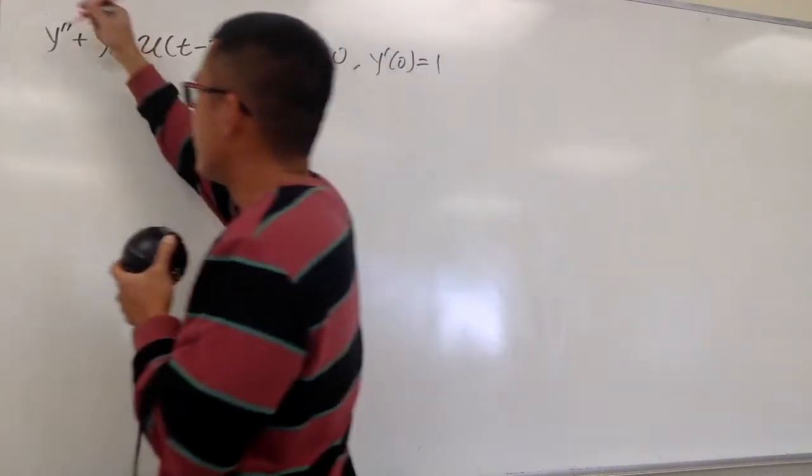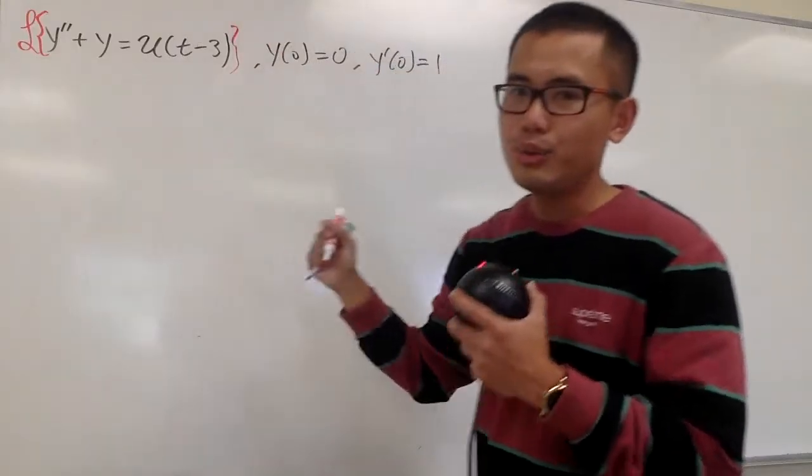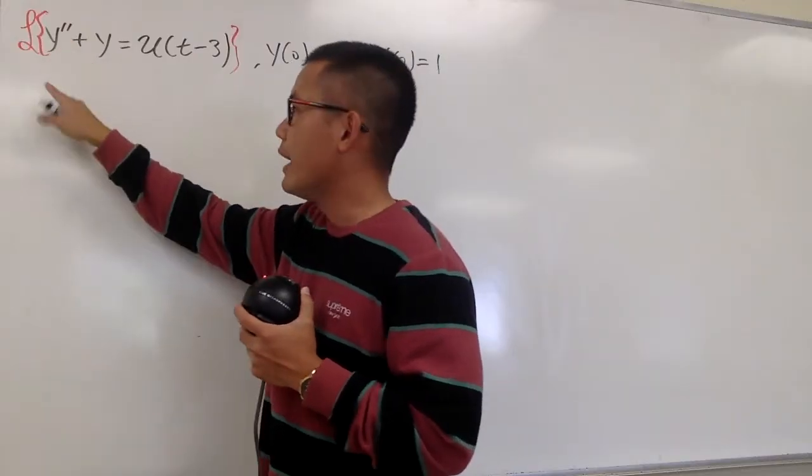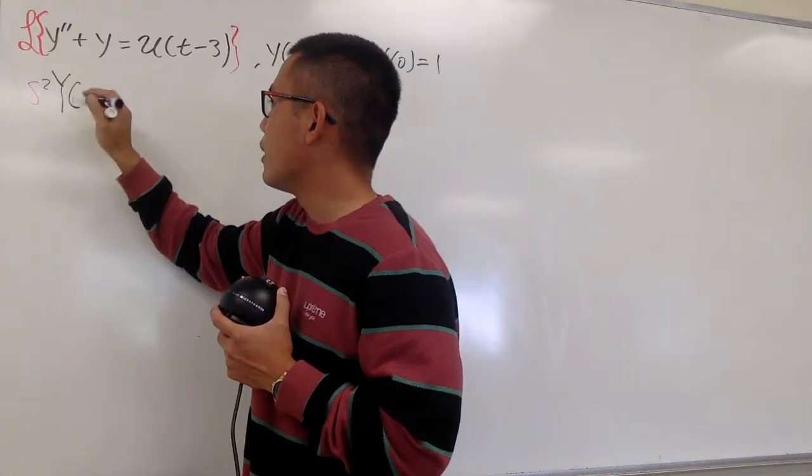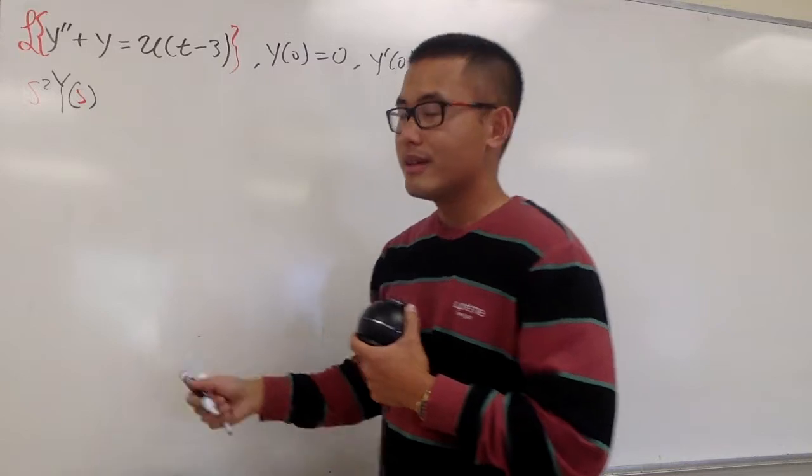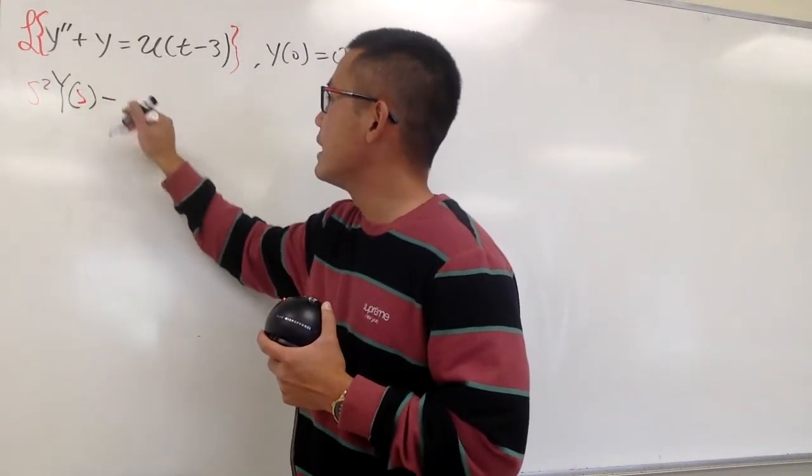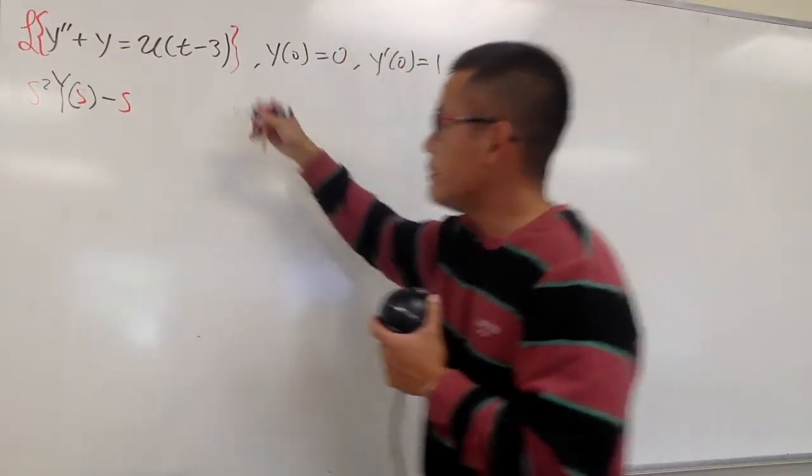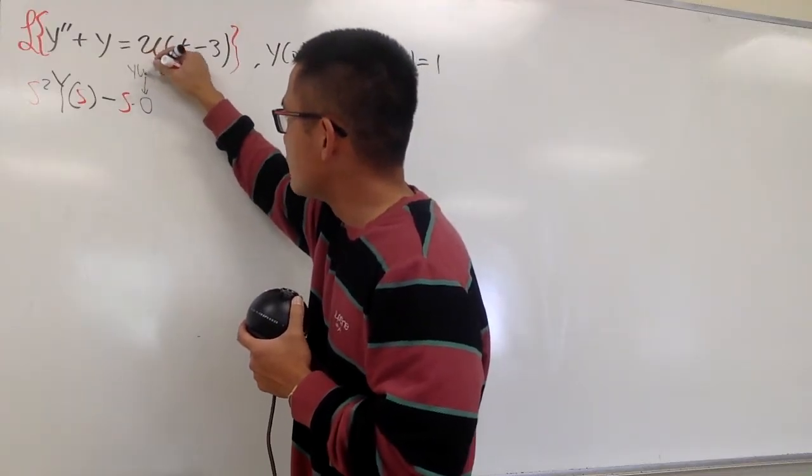So let me put down, here is the original Laplace transform notation, and we will take all this into the S world first. For y double prime, we will end up with S squared times capital Y of S. We are going to isolate the Y of S later on. This is the first part, and then we will have minus S times Y of 0. Let me just indicate that we are just multiplied by 0, but this 0 is because Y of 0 is 0.